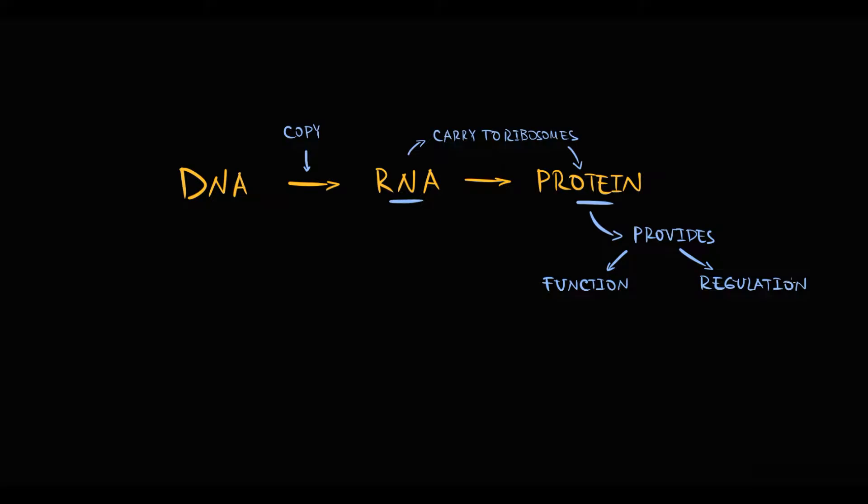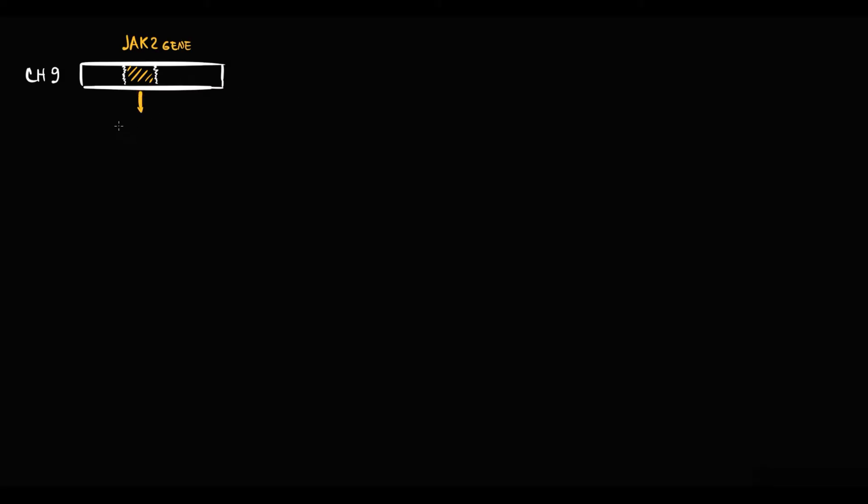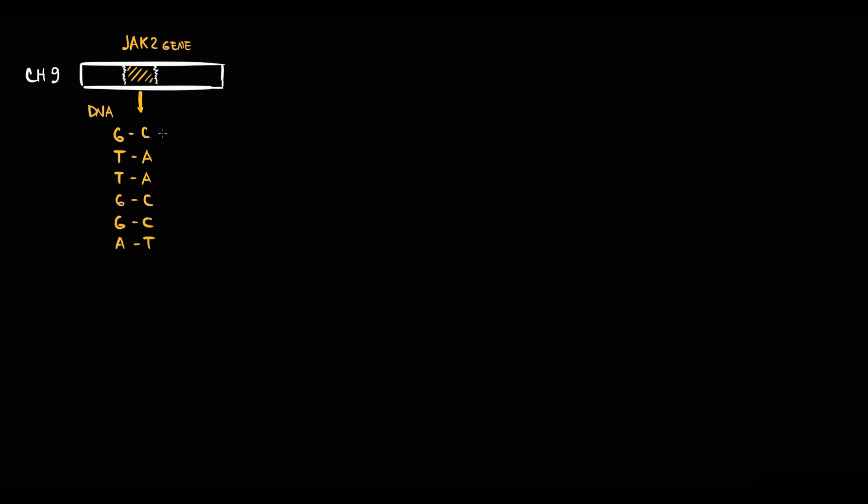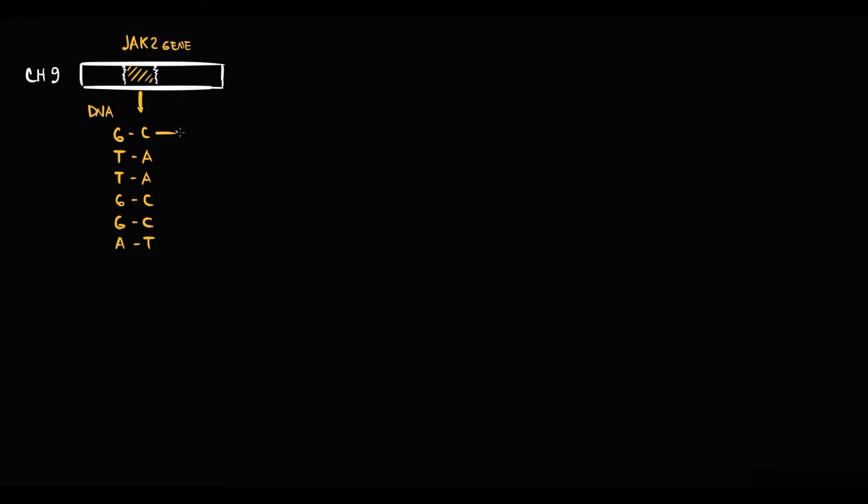JAK2 gene on chromosome 9 is a number of nucleotides that form DNA molecule. DNA molecule consists of two strands: coding strand and non-coding strand. To use this information in the gene, information must be carried to ribosomes where proteins are produced. DNA molecule makes a copy of the gene in form of pre-mRNA molecule. This process is called transcription.